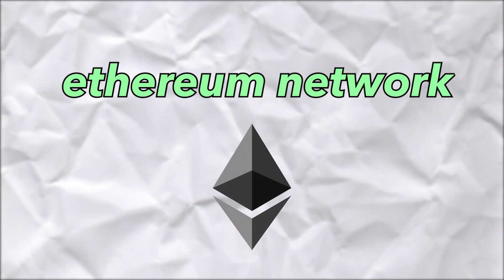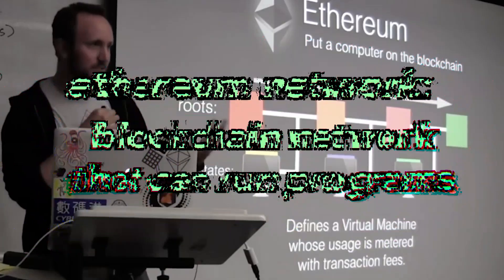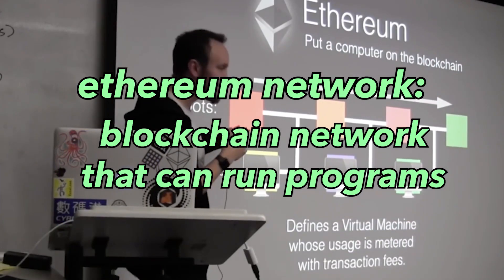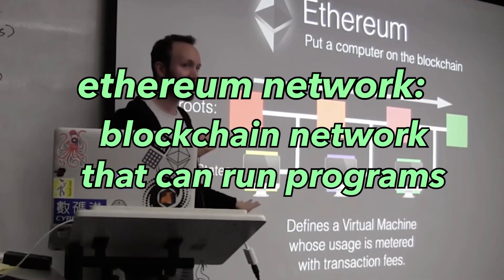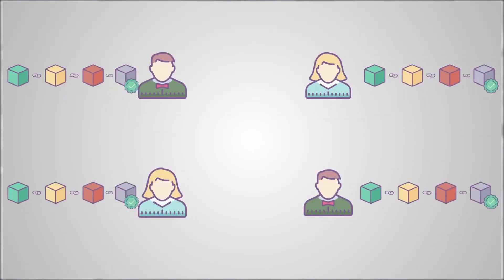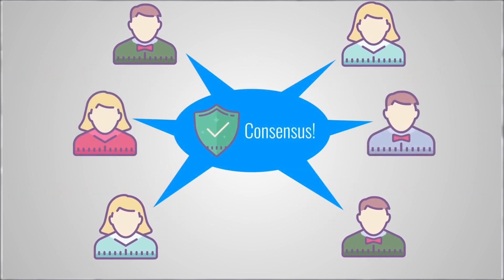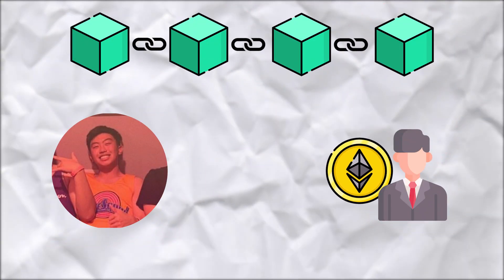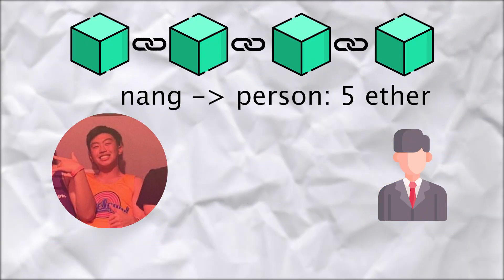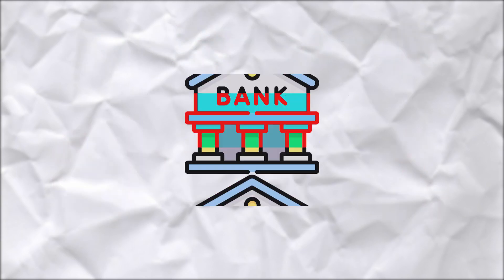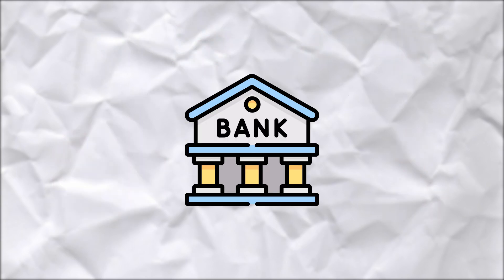First, there's this thing called the Ethereum network. The Ethereum network is a blockchain network that allows for programs to be run on it. A blockchain is a decentralized network where everybody in the network agrees on a single chain of events. So if I send someone some money, this transaction will be on the blockchain and agreed on by the network without the need of any intermediary like a bank.